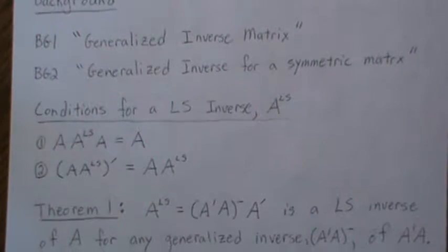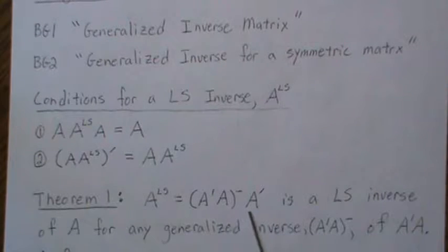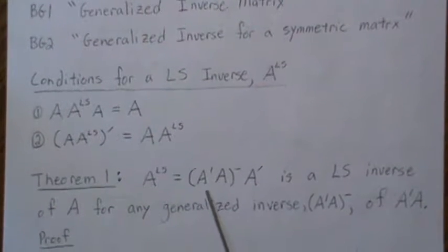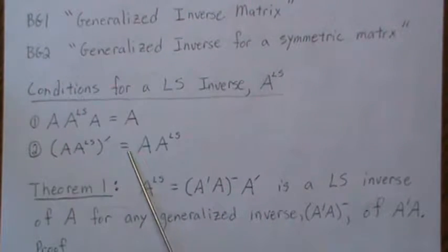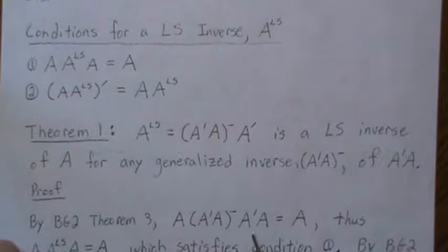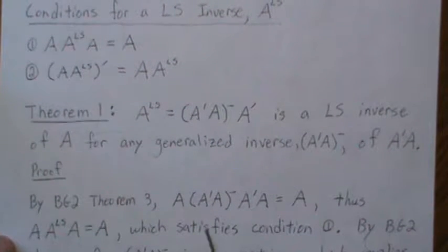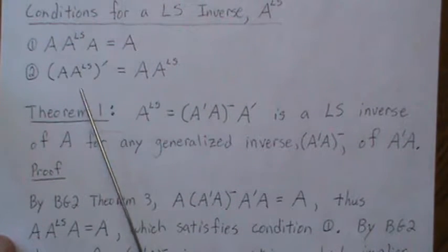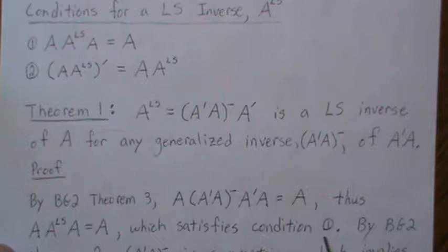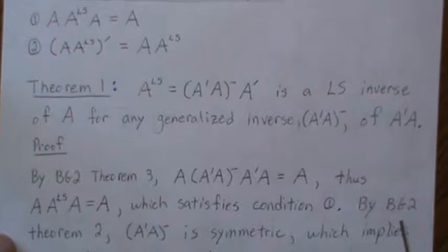Let's look at some theorems. The claim is that this matrix A_LS is the least squares inverse for A, for any generalized inverse of A-prime·A. To show it's a least squares inverse it has to meet these two properties. By background video two, theorem three, we showed that the first property holds for any generalized inverse, so condition one is automatically met.